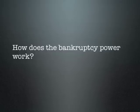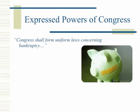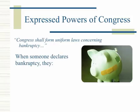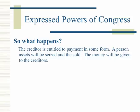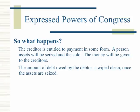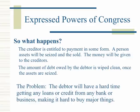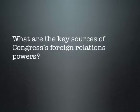How does the bankruptcy power work? Congress shall have formed uniform laws concerning bankruptcy. When someone declares bankruptcy, they can't pay their debt. Congress has passed laws that protect both creditors and debtors. The creditor is entitled to payment in some form — a person's assets will be seized and sold, and the money given to the creditors. The amount of debt owed by the debtor is wiped clean once the assets are seized. However, the debtor will have a hard time getting any loans or credit from any bank or business, making it hard to buy major things.